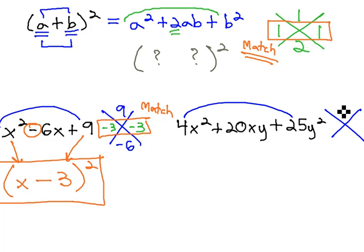4 times 25 is 100. We want to multiply to 100 and add to the middle number 20. Clearly, this is 10 and 10, but what's interesting to us is that those numbers match.